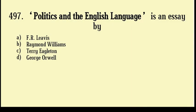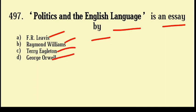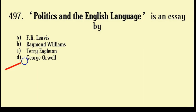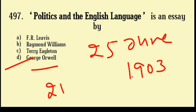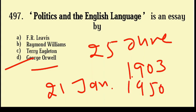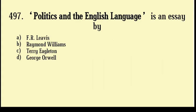Politics and the English Language is an essay written by: Alfred Lewis, Raymond Williams, Terry Eagleton, George Orwell. Correct answer: Option number D, George Orwell. George Orwell was born 25th June 1903 and died 21st January 1950. George Orwell was an English novelist, essayist, journalist, and critic.